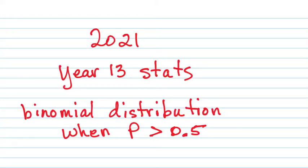Today we're going to continue our look at binomial distributions and we're going to look at what happens when the probability is greater than 0.5. Because if you'll remember, our chart only goes up to 0.5. So if it's greater than that,